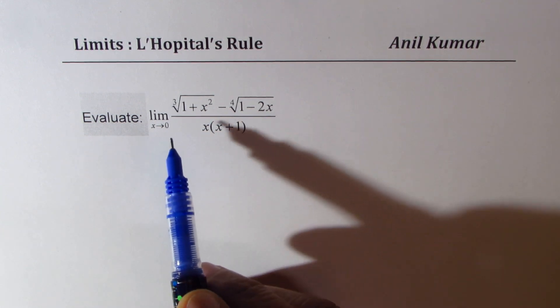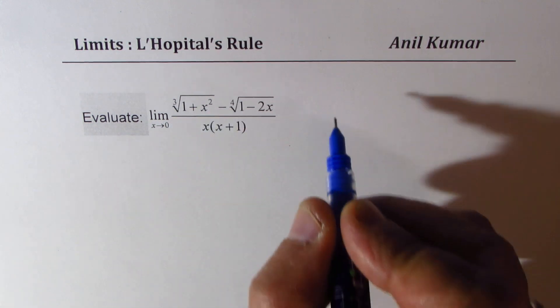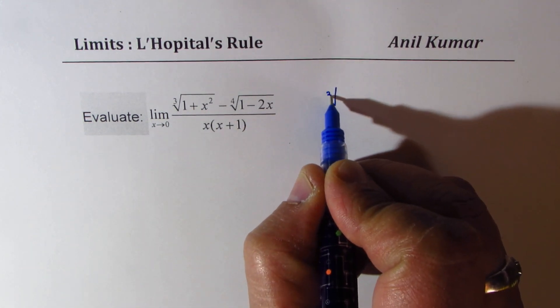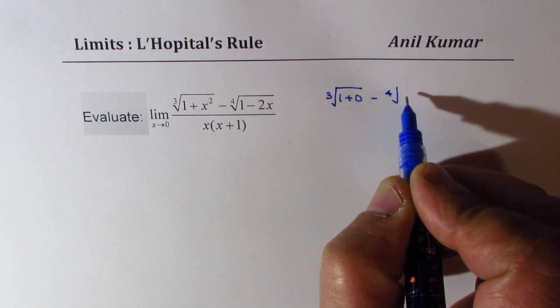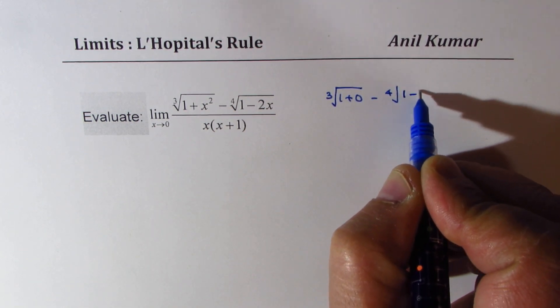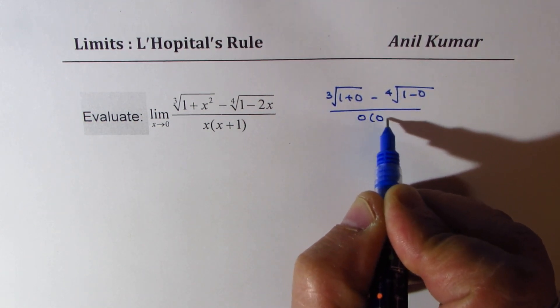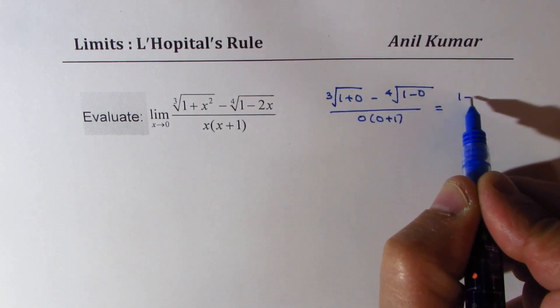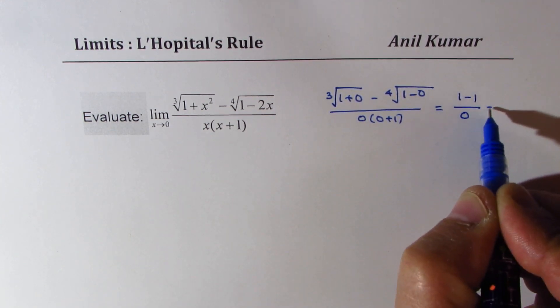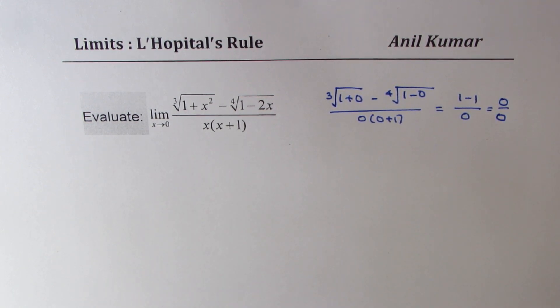Now, if I substitute 0, what do I get? If I substitute 0, I get cube root of 1 plus 0 minus 4th root of 1 minus 0 over 0 times 0 plus 1, which is 1 minus 1 over 0, which is 0 over 0. Now, that is indeterminate form.